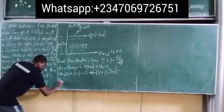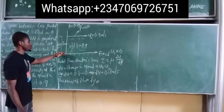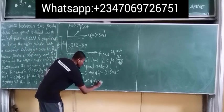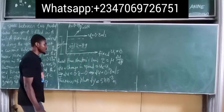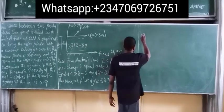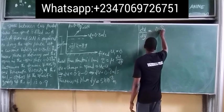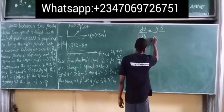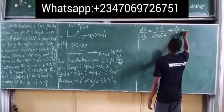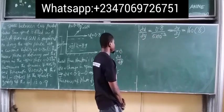Next is the thickness of the plates, which is dy — the distance between the two plates. That distance was given as 5 millimeters, which we convert to 5 times 10 to the power of minus 3 meters. So du over dy equals 0.8 divided by 5 times 10 to the power of minus 3, which gives us 160 per second.